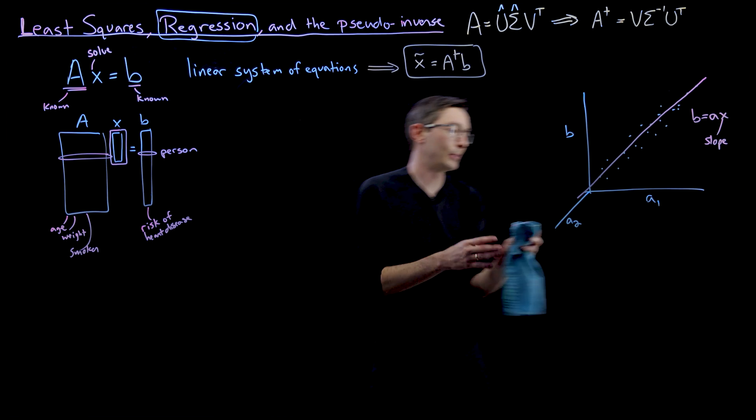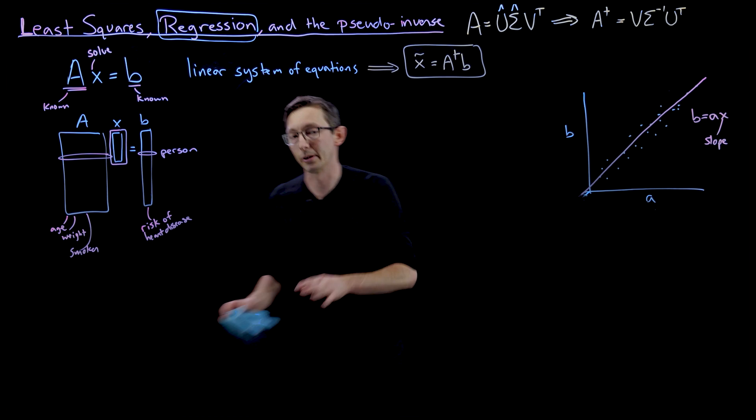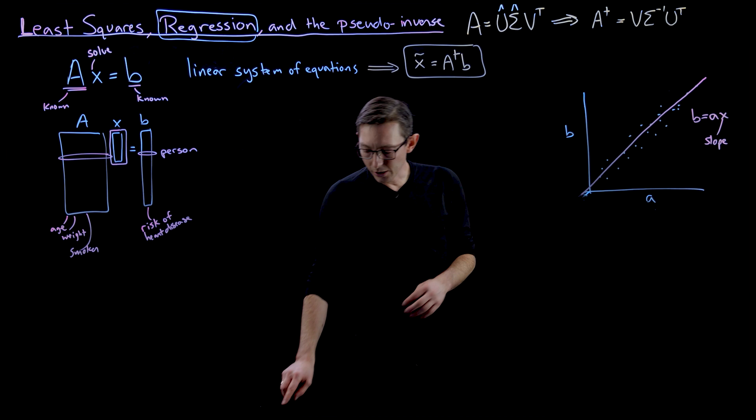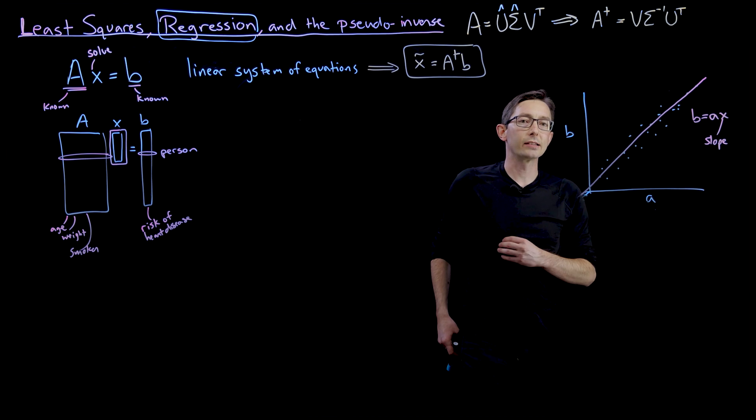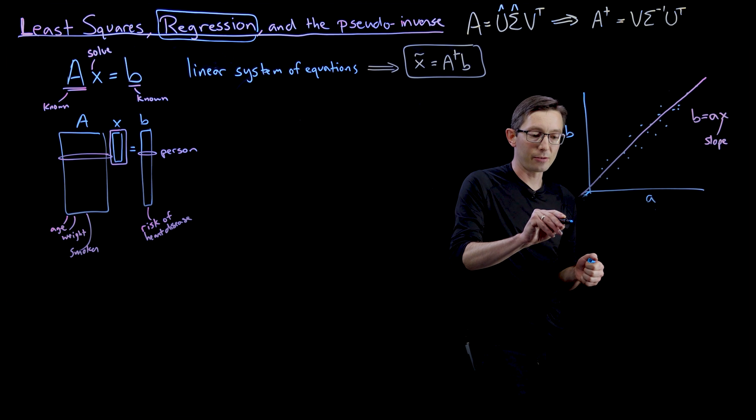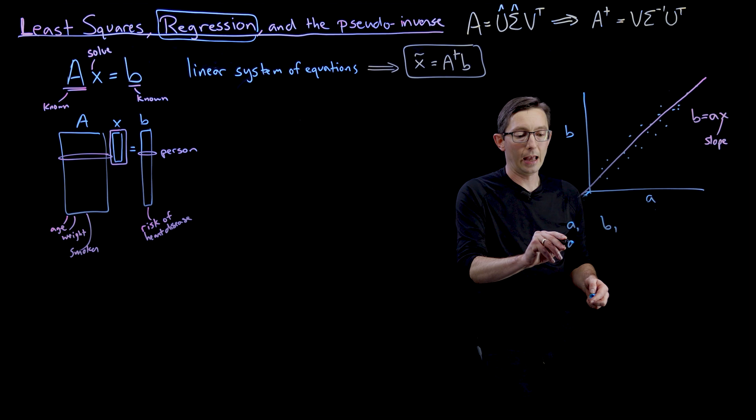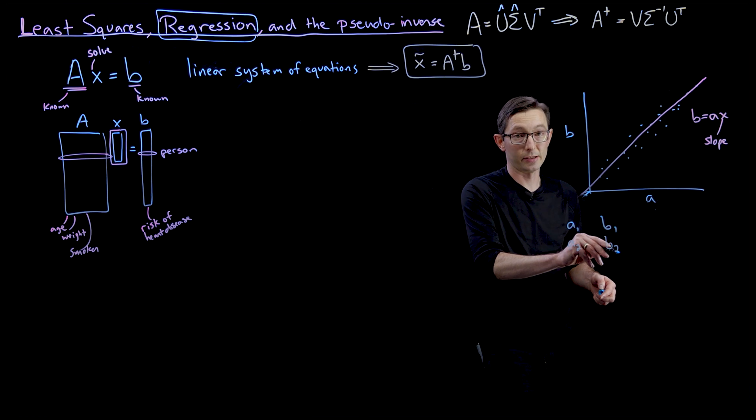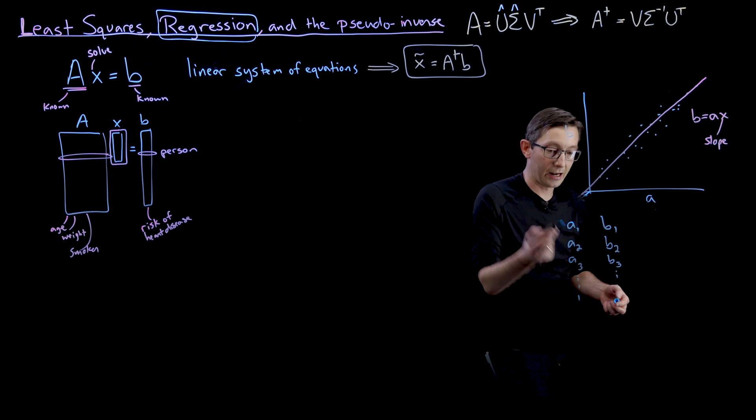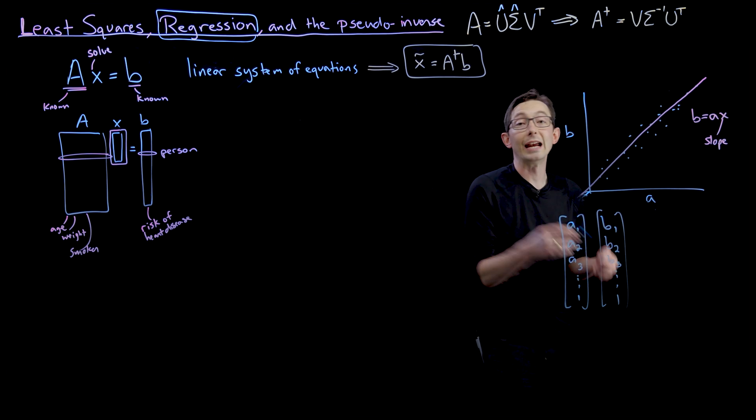Now for now, I'm going to keep it simple, and I'm just going to assume that I have one factor A, and I'm going to try to predict B using that one factor. And usually, my data is going to come in the form of pairs of measurements A for person one and B for person one, A for person two and B for person two, and so on and so forth. And I'm going to have a lot of these measurements, and I'm going to stack them into these tall vectors of data.